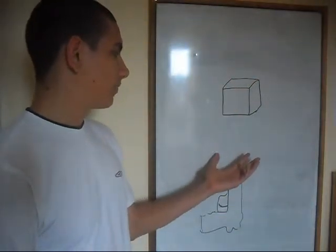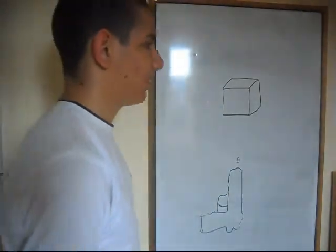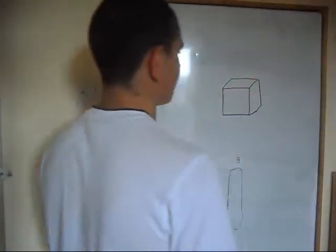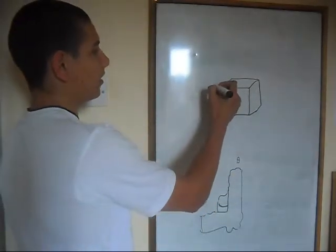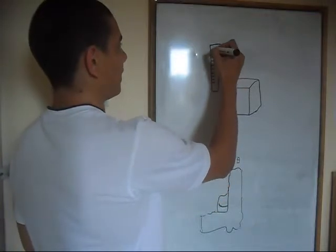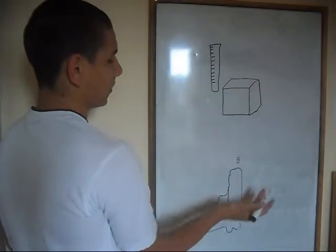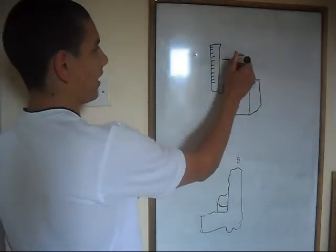The force of the bullet takes the block up, and next to the block of wood we have a ruler and the maximum height it goes up to. The block would, because of the bullet, move up to there.